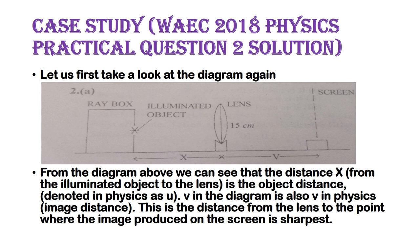Looking at the diagram again: X is the object distance U; V in the diagram is the image distance. The diameter alpha-naught of the illuminated object is the same as object size OH in physics. The focal length of the lens provided is 15 cm. Any value of alpha-naught is acceptable, but try to use the one provided by the physics teacher at your exam center.